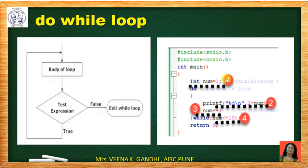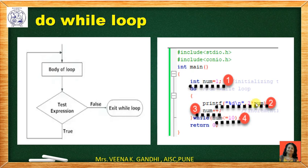Here we want to print the table of 2 using a do-while loop. In the body of the do-while loop, print 'percent d backslash n, 2 * num'. Since num starts at 1, it prints 2. After that, num is incremented by one. Then the condition is checked: while num is less than or equal to 10. If true, the loop body executes again, printing 4, then 6, and so on. When num becomes 11, the loop terminates. If you don't increment num, it remains 1 and the loop executes an infinite number of times — so you must update the num value so the condition eventually fails.